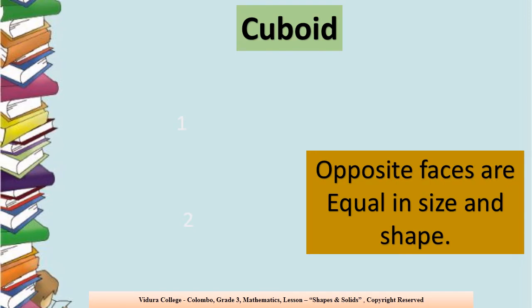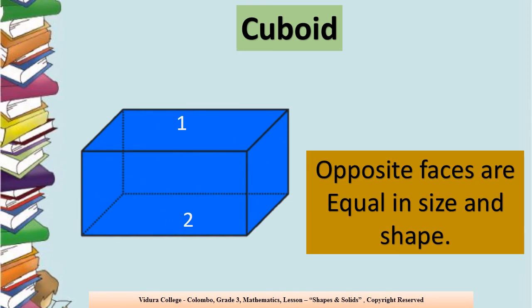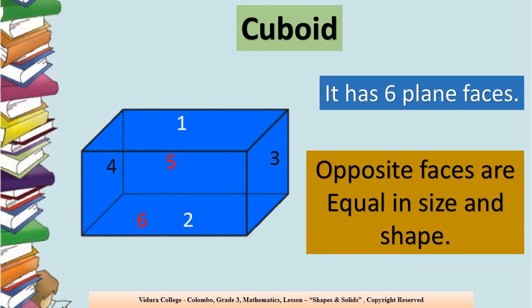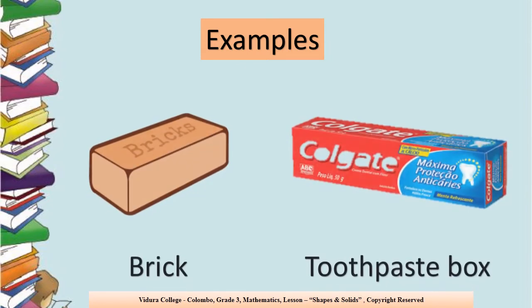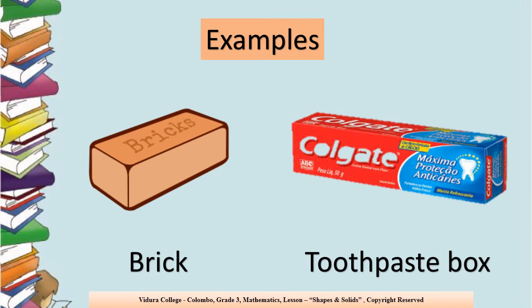This is a cuboid. It has six plane faces — let's count: one, two, three, four, five, six. There are six plane faces. And opposite faces are equal in size and shape. What are the examples we can take for cuboid? Brick and toothpaste box.